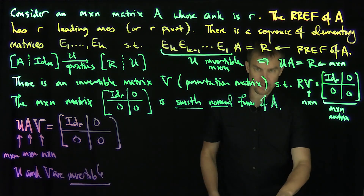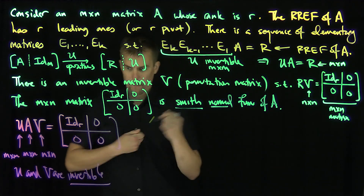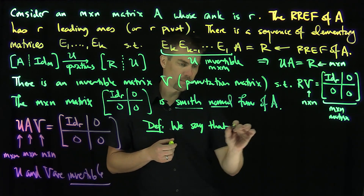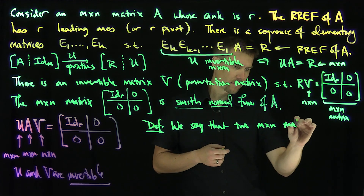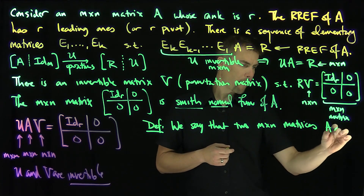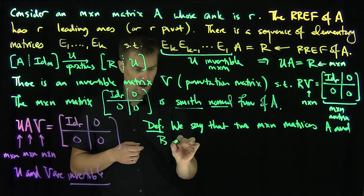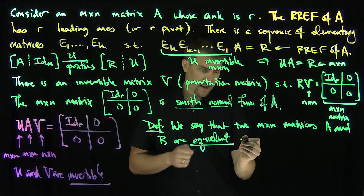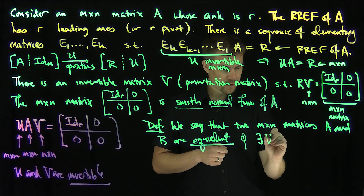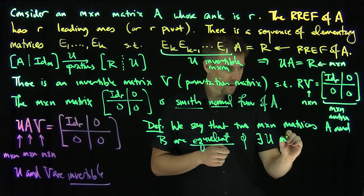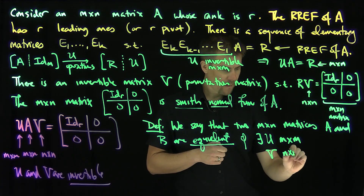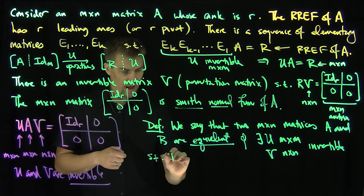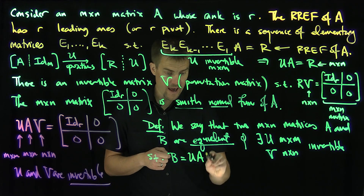This allows us to state the following definition. We say that two M by N matrices A and B are equivalent if there exists an M by M invertible matrix U and an N by N invertible matrix V such that B equals U times A times V.